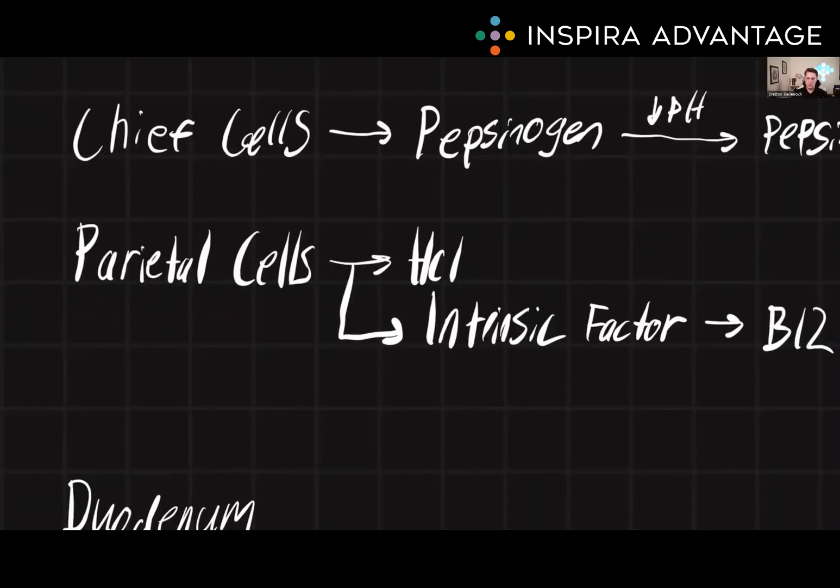Parietal cells are responsible for producing and secreting hydrochloric acid, as well as intrinsic factor. Hydrochloric acid is a strong acid that helps kill any pathogens that may be present in the food, as well as helping to lower the pH of the stomach to around 2. This is necessary for the activation of pepsin, as we saw earlier, as well as other enzymes involved in protein digestion.